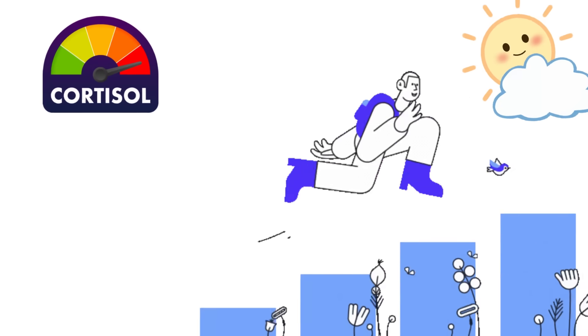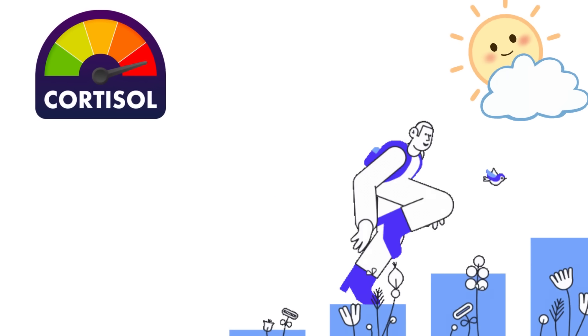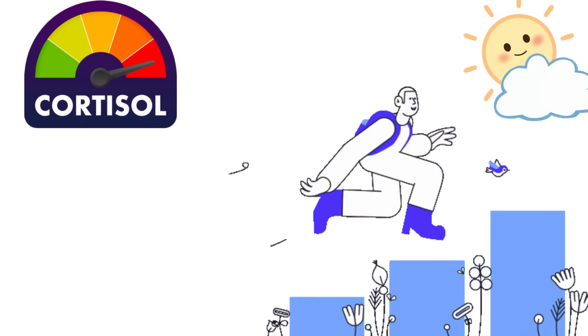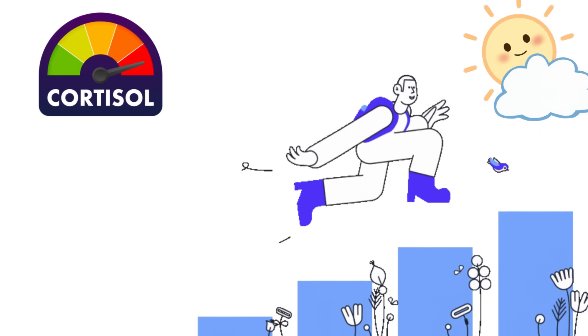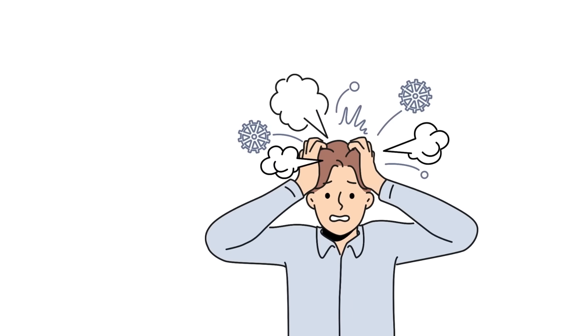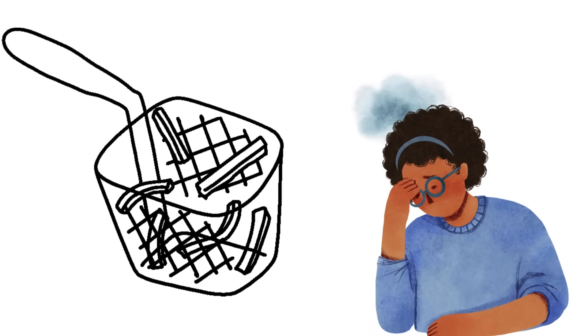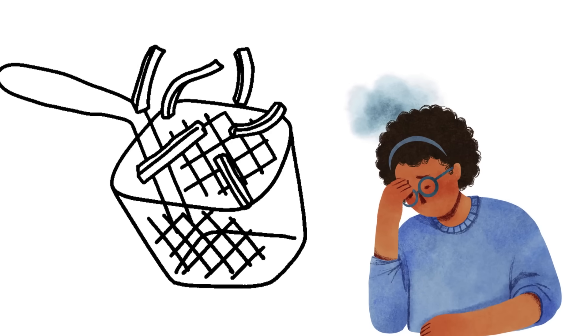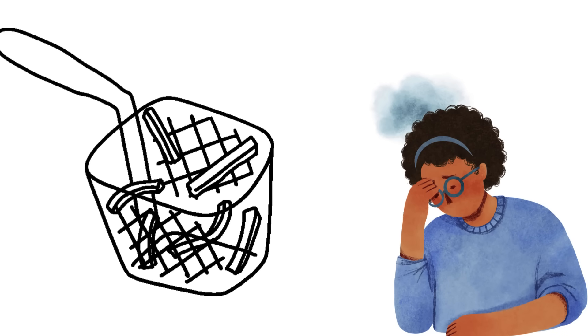Then there's cortisol, the stress hormone that typically peaks in the morning to help you wake up and face the day. For night owls, this cortisol rhythm can get out of whack, leading to higher levels of stress and inflammation in the body. And we all know that chronic stress is about as good for your health as a diet of pure sugar and deep-fried everything.